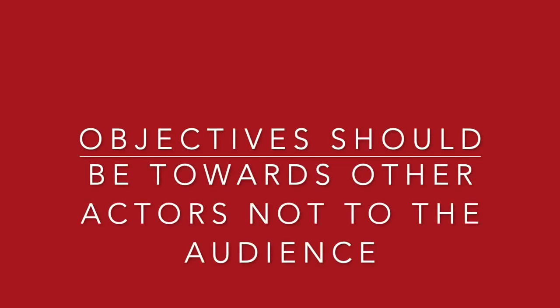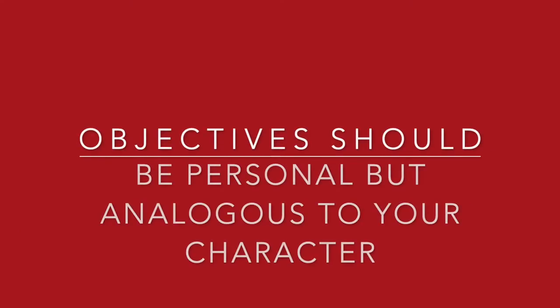Stanislavski said that there are correct and incorrect objectives that actors can have, and he gave some general guidelines. First, right objectives should be towards other actors and not towards the spectators — if your objective is to show off in front of the crowd, that's not going to bring anything real to your performance. Secondly, they should be personal but analogous to your character. Yes, the objectives are personal in that each actor will have a different specific understanding of the character's goals, however they should still be true to the character so that other people would understand how you derived them.